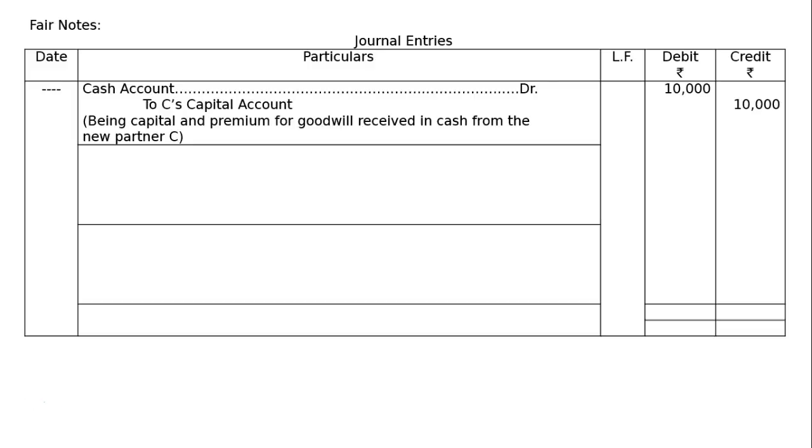Fair notes. Journal entries: the date, particulars, ledger folio, debit credit with rupee symbols. There is no date. Cash account debited to C's capital account - being capital received in cash from the new partner C. But here, there is no premium. Hence, only capital received from C will be the narration, 10,000.